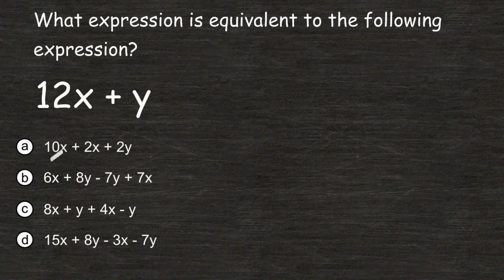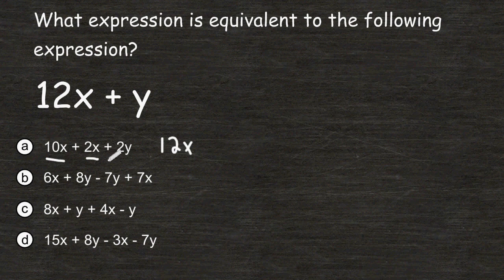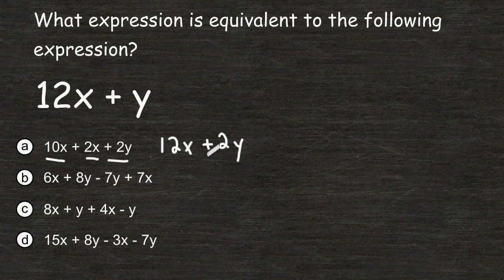For choice A we can combine the terms 10x and 2x and that would give us a total of 12x, and this term here is plus 2y. There are no other y terms to combine with it so we simply write plus 2y at the end. 12x plus 2y is not equivalent to 12x plus 1y so we can eliminate choice A.